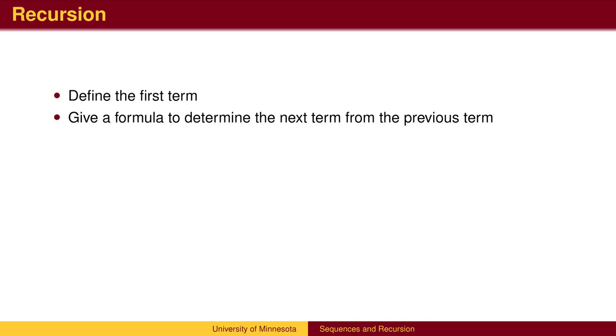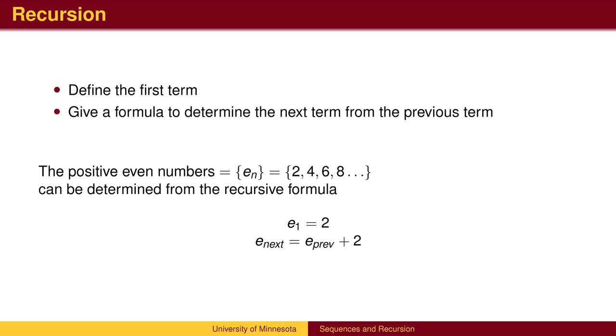We can also define a sequence recursively. To do so, we must define the first element and then give a recursive formula to find future elements based on previous elements. In the case of the positive even numbers, the first term is 2. We get the next even number by adding 2 to the previous number.